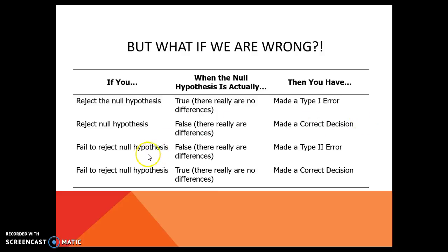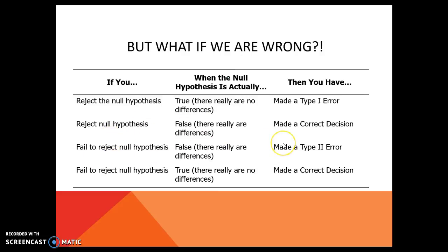If we fail to reject the null, we are saying that there are no differences between the groups. So if we fail to reject the null, then we are supporting that there is no difference. In reality, if that is false — so there really are differences in the population — and we just couldn't find them, that's a type 2 error.